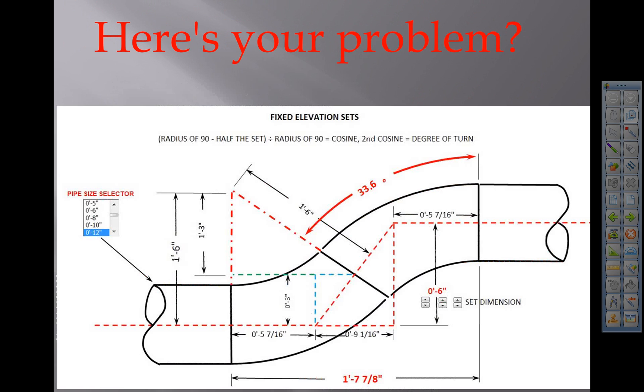Here's your problem. 12 inch pipe. Step 1: You'll draw a line AB, 57.25 inches long.